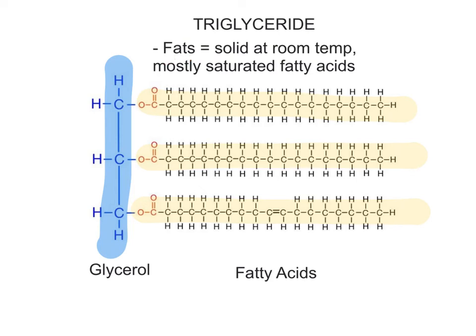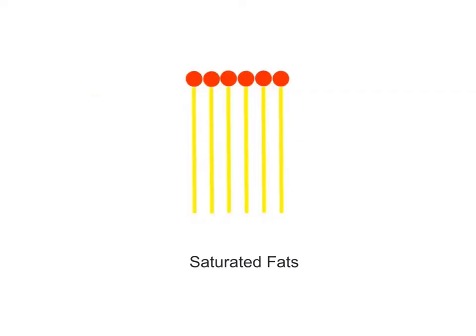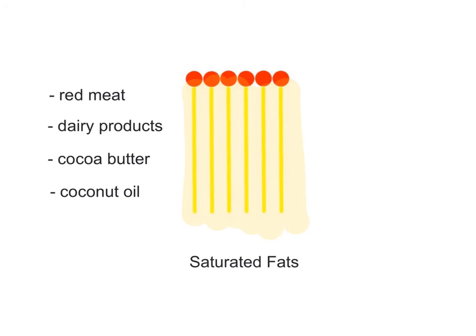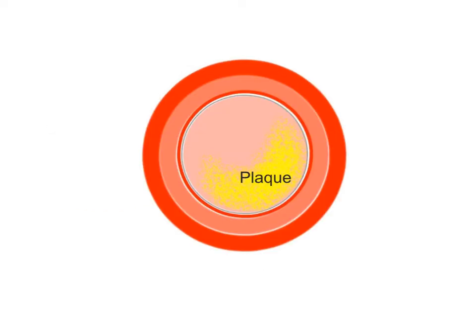Fats are triglycerides that are solid at room temperature and consist mostly of saturated fatty acids. Because saturated fats don't have any double covalent bonds, they can pack closely together and more easily form solids at room temperature. Saturated fats are common in red meat, dairy products like whole milk, cheese, and butter, and some plant products including cocoa butter and coconut oil. A diet high in saturated fats has also been linked to heart disease because these fats can pack closely together in blood vessels and form plaques that can block the vessel.